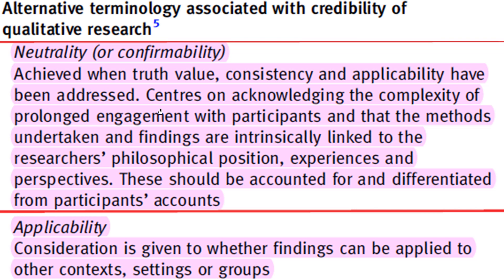In terms of neutrality, as long as you've been upfront and you acknowledge the complexity of prolonged engagement with participants — because you'll typically become sympathetic to them — and that your methods and findings are linked to your own philosophical position and experiences, you are doing a good job. You try to separate your biases from participants' accounts so a reader knows what belongs to you and what belongs to your participants. That's how neutrality or confirmability is achieved.